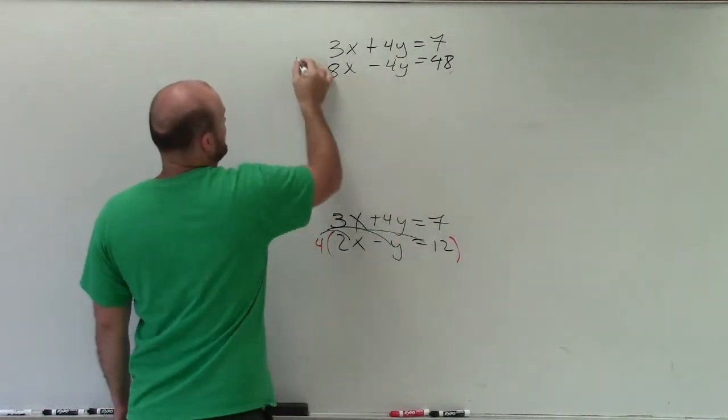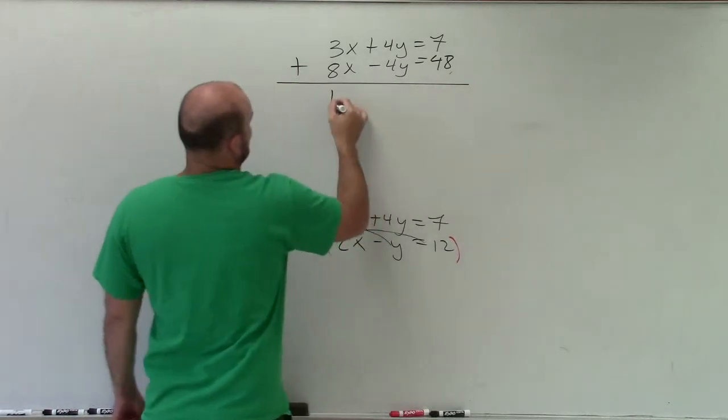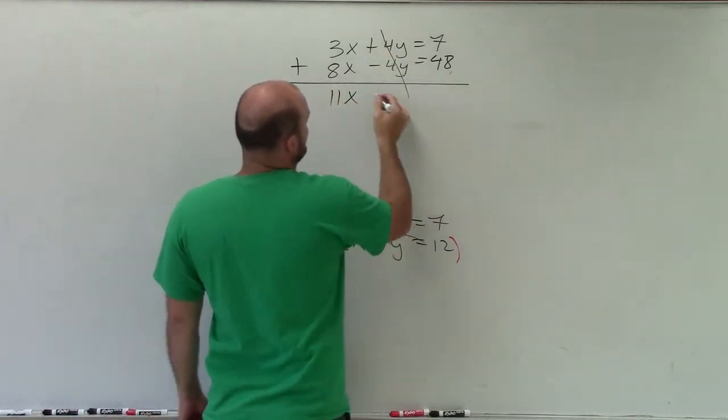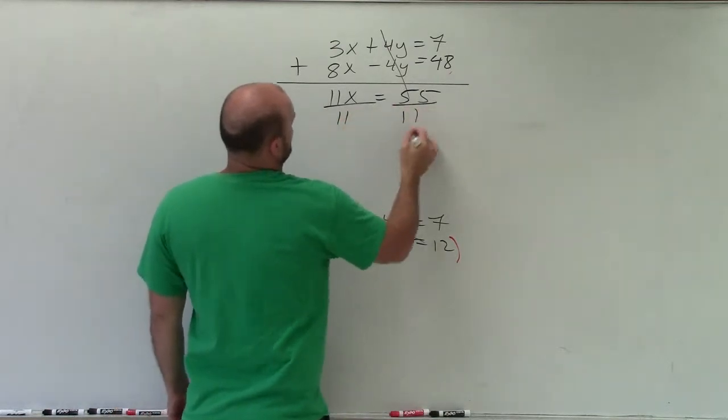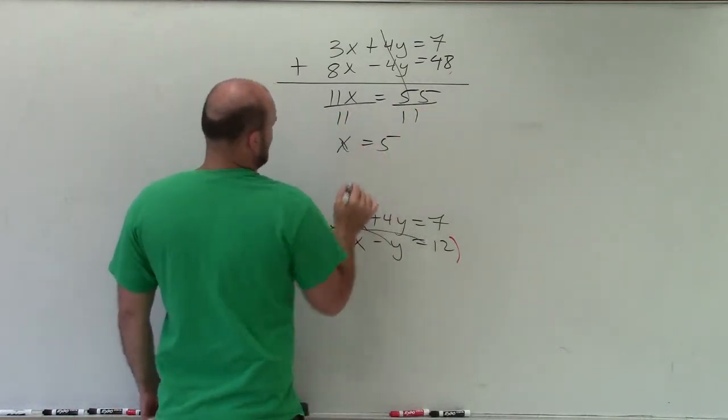Now, to get these together, I will add the two equations, and I get 11x, that goes to 0, equals 55. Divide by once, x equals 5. Okay, cool.